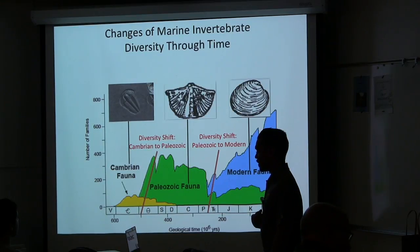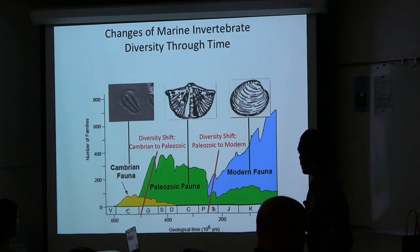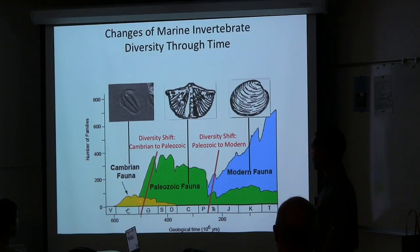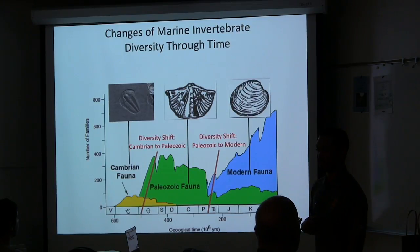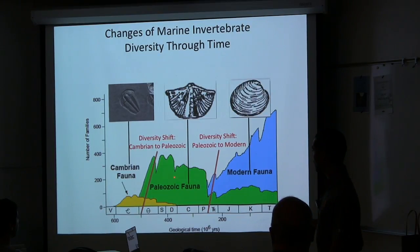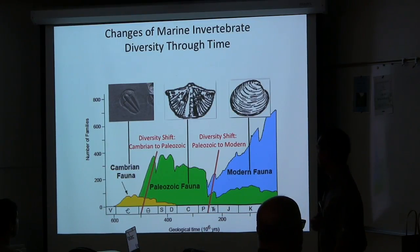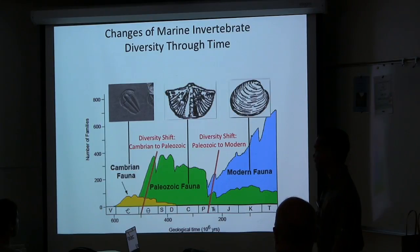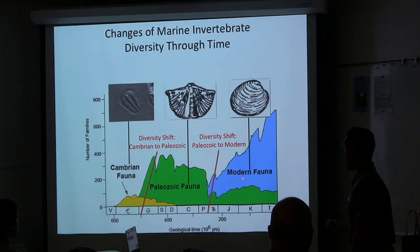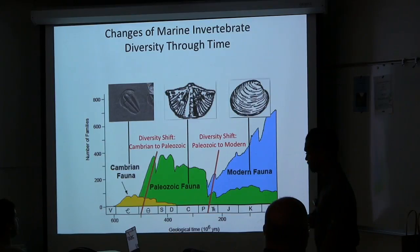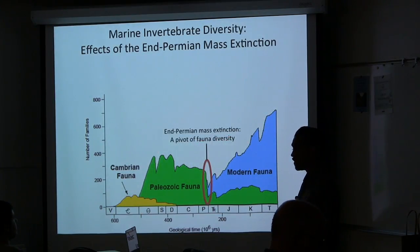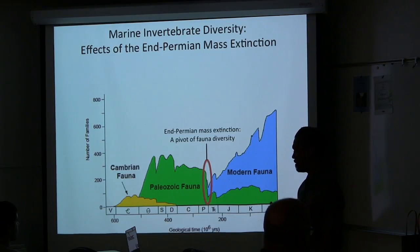Diversity refers to the quantity and variety of different fauna. From 600 to 500 million years ago, the Cambrian fauna were the most diverse. Then there was a diversity shift to the Paleozoic fauna, which were most diverse from 500 to 250 million years ago. The final diversity shift happened about 250 million years ago, where modern fauna became most diverse, following the End-Permian mass extinction.